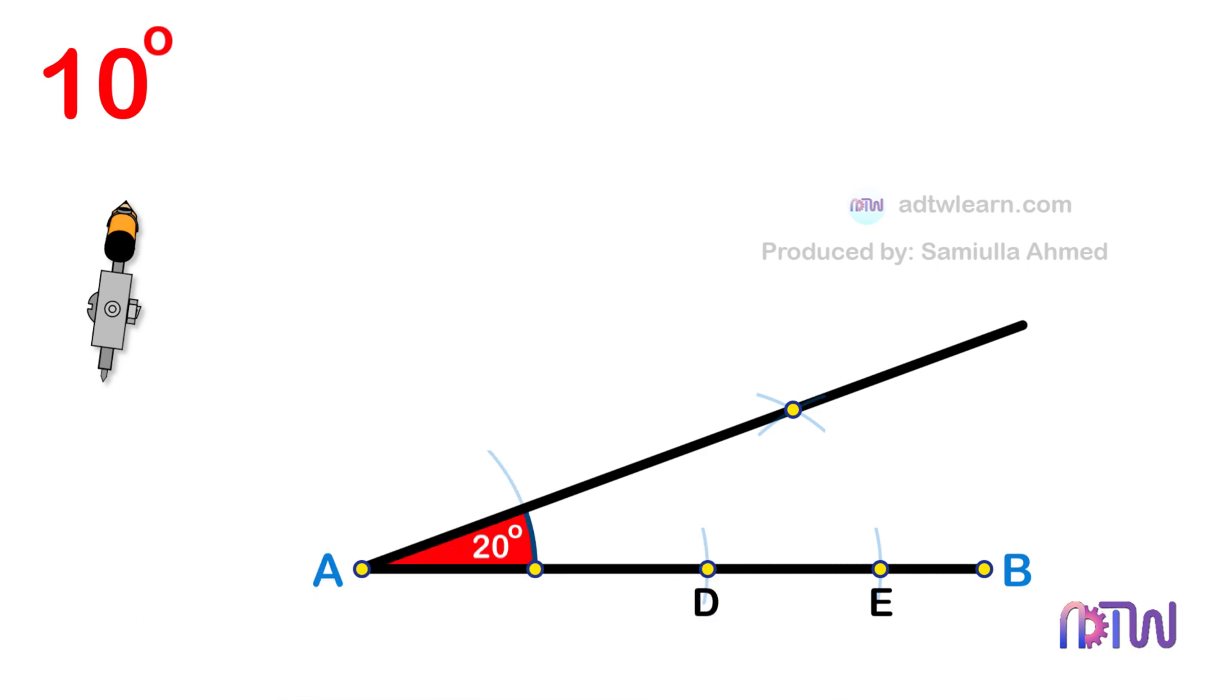After this, we know that 10 degrees is half of 20 degrees. Therefore, we need to divide this angle in half.